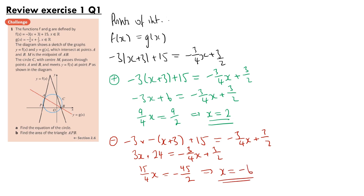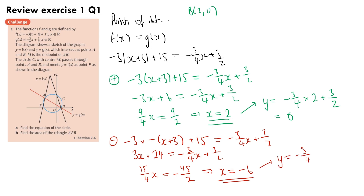Now we can find the corresponding values of y. For the positive case (x equals 2), y equals minus 3 quarters times x plus 3 halves, which gives minus 3 halves plus 3 halves, so 0. Therefore point B is (2, 0). For point A (x equals minus 6), y equals minus 3 quarters times minus 6 plus 3 halves, which equals 6. So point A is (minus 6, 6).